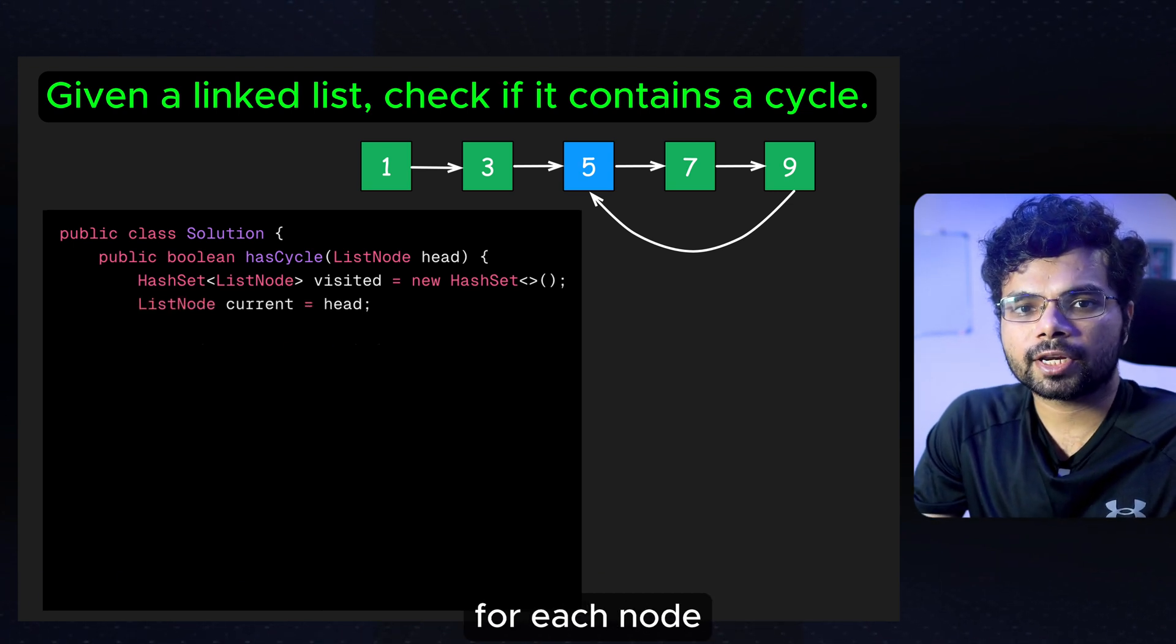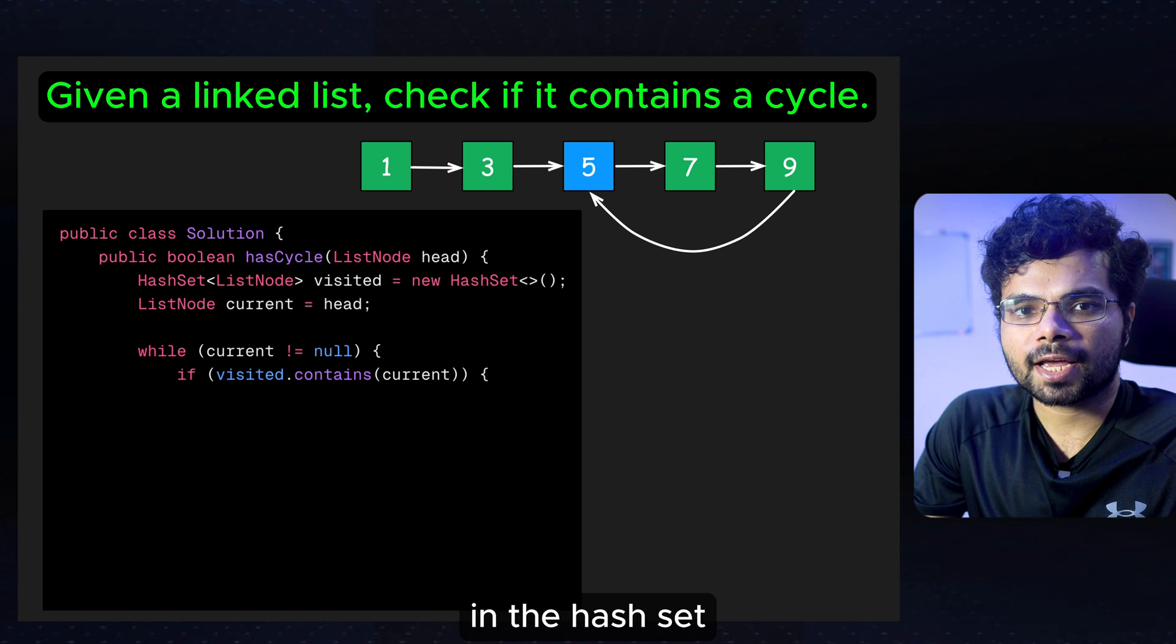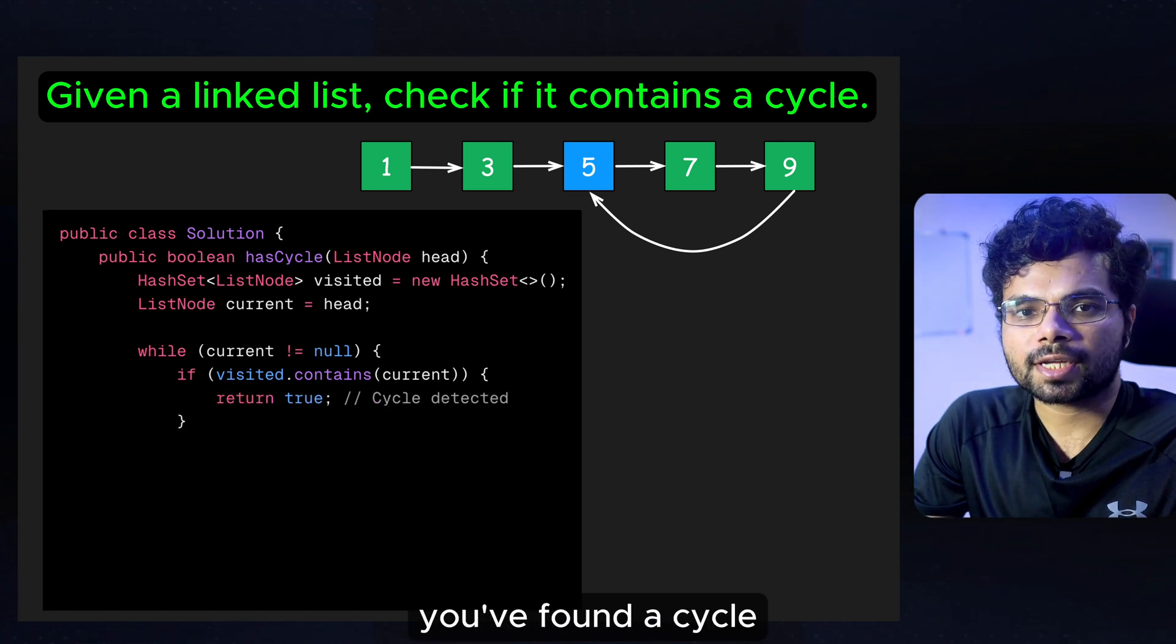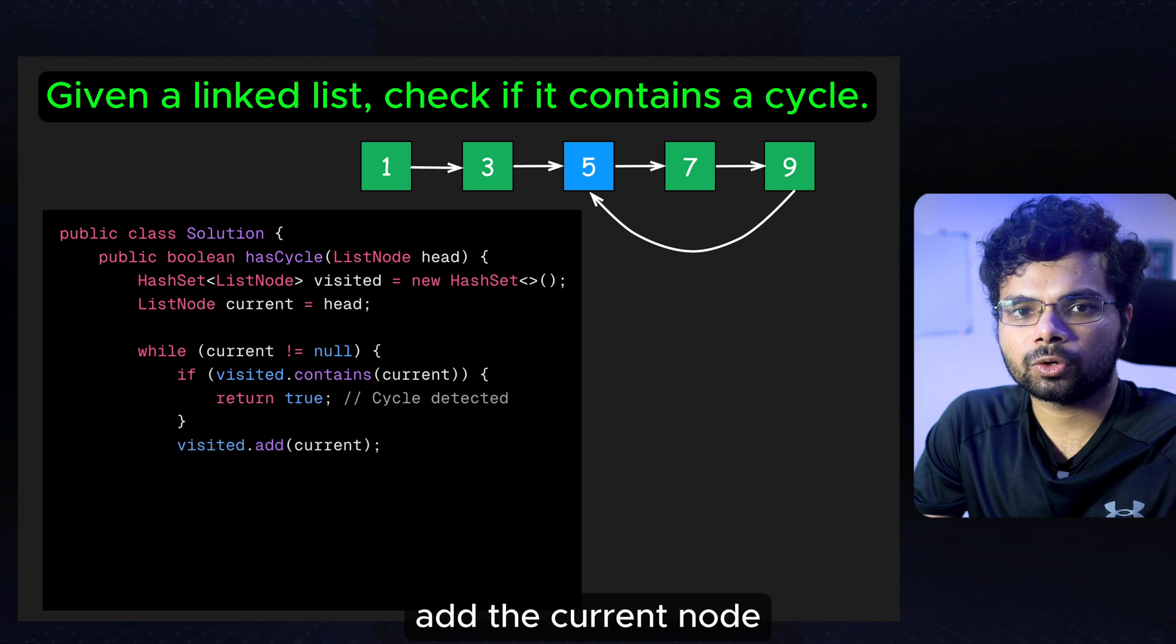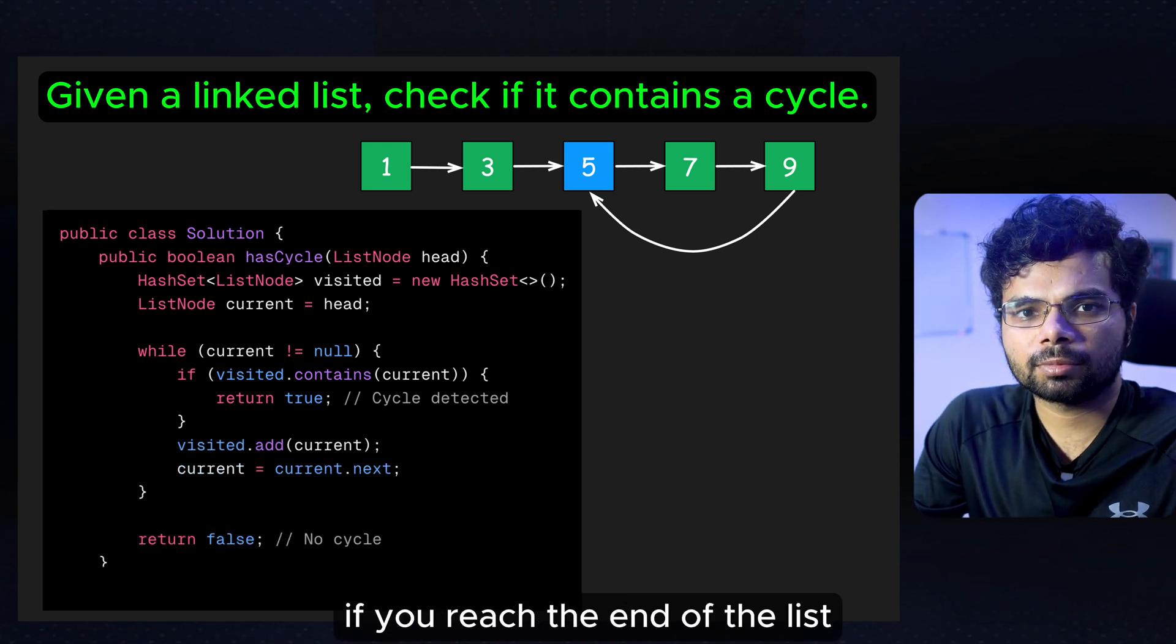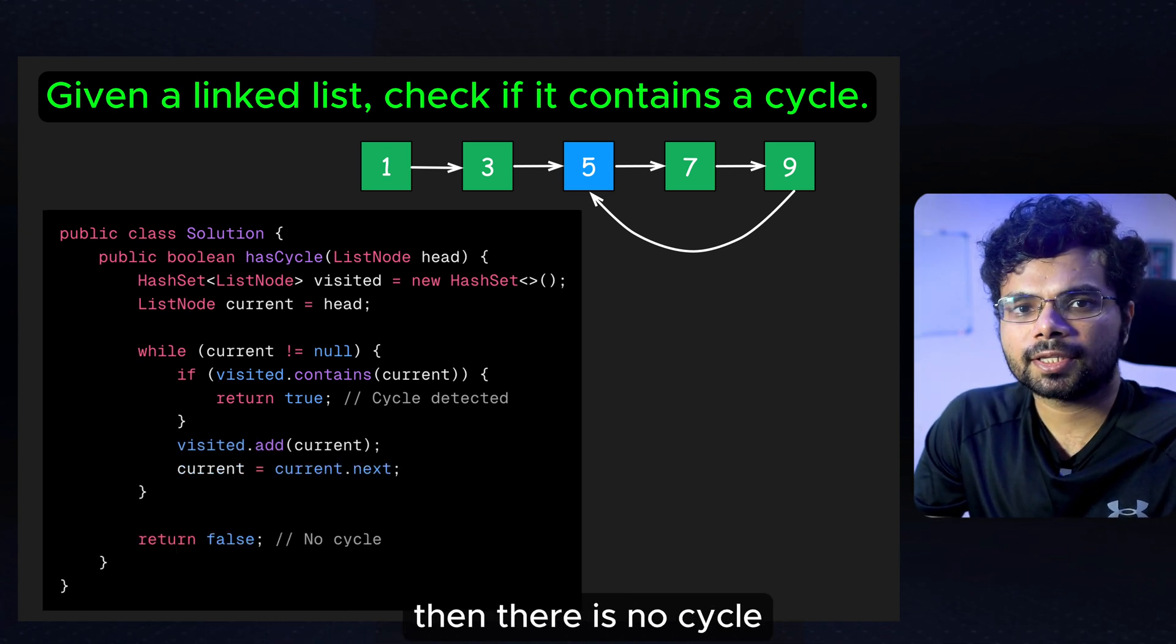Start at the head of the linked list. For each node, check if it's already in the hash set. If it is, you have found a cycle as you are revisiting one of the previous nodes. If not, add the current node to the hash set. If you reach the end of the list without revisiting any nodes, then there is no cycle.